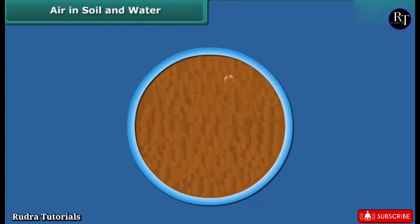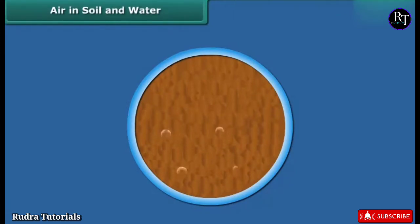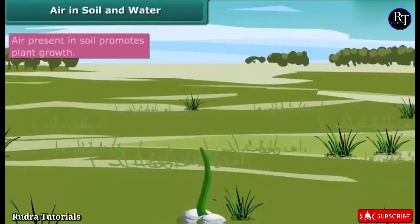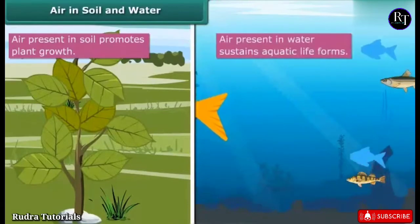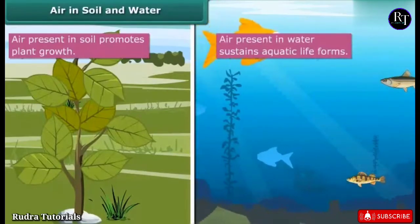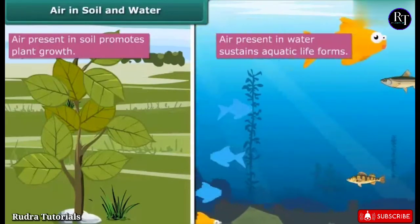Take some soil in a glass and add water to it slowly. Do you see bubbles forming in the soil? Soil contains air between its particles. When water is added, air is replaced by water, causing bubbles to form. Air present in soil promotes plant growth. Air is also present in water, helping fish and other aquatic life forms survive.